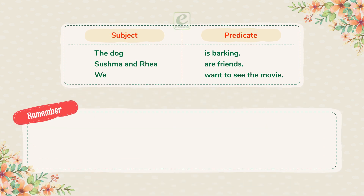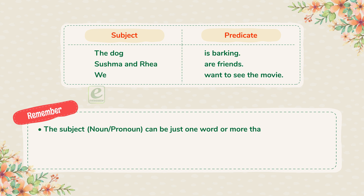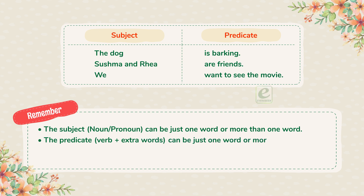Remember: the subject, a noun or pronoun, can be just one word or more than one word. The predicate — verb plus extra words — can also be just one word or more than one word. The subject usually comes before the predicate.